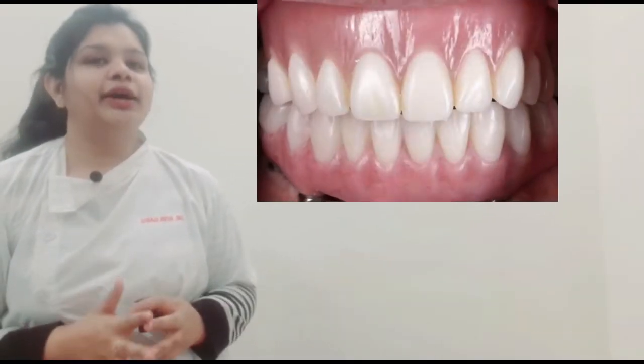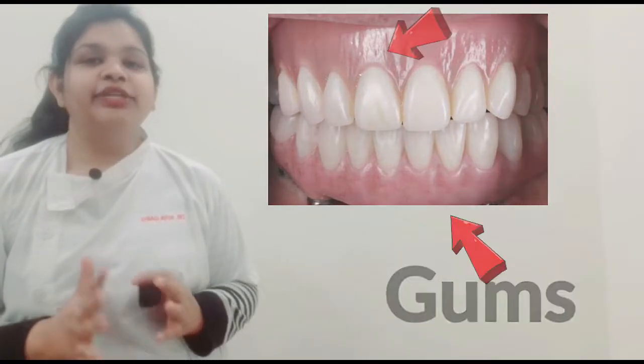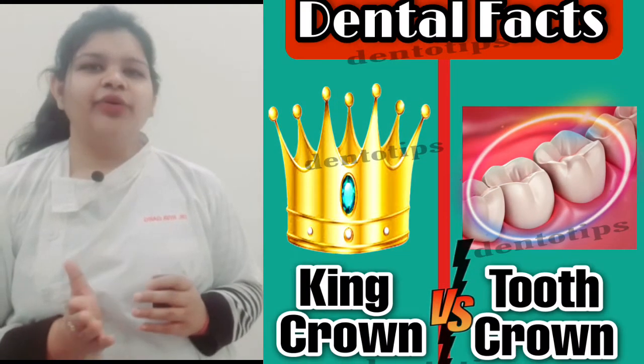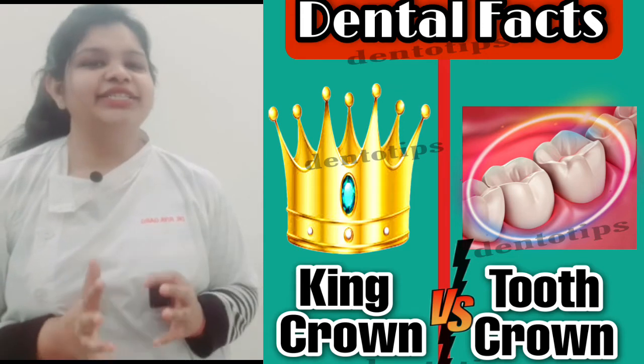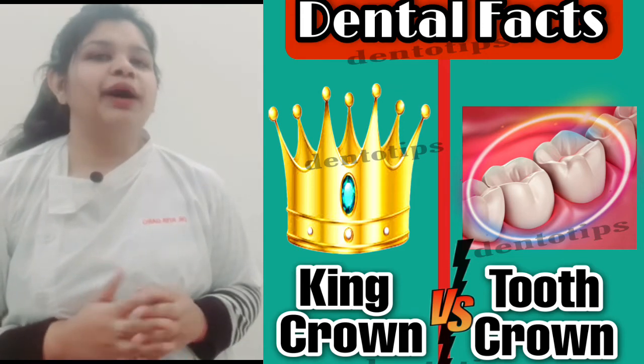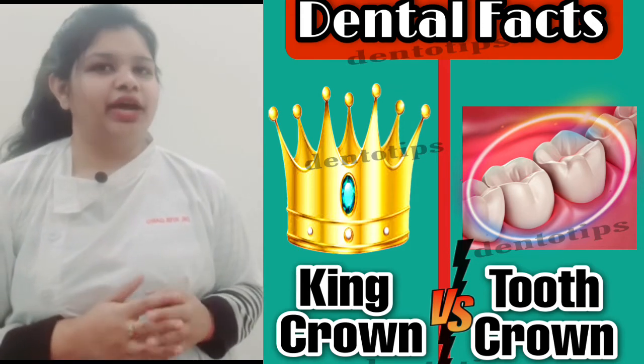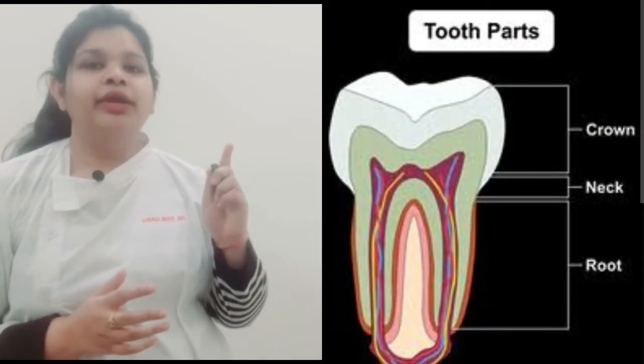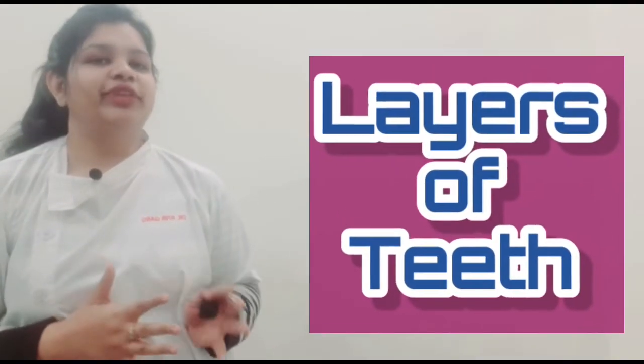There's a lot more in our tooth than just the part we see in our smile, because our gums hide all the areas except the top of our tooth, which is known as the crown. In dental terminology, the uppermost part of our tooth is known as crown. Our tooth is divided into three parts: crown, neck, and root. These parts consist of different protective layers. So let's talk about the layers of our teeth.